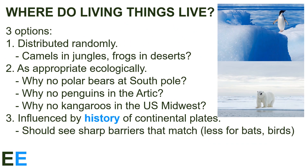That gives us three options for why different species live where they do. One, they could be distributed randomly — but we know that's not the case. We don't see camels in jungles or frogs in the desert. Two, species could live wherever it's appropriate ecologically. That explains why we see camels in deserts and frogs where it's wet, but it doesn't make sense for everything.